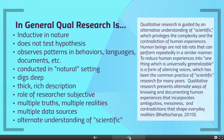We also recognize that there are multiple truths and multiple realities, and that what is true for one participant may not be true for another. We're going to collect data from multiple sources, and we understand that qualitative research is an alternate understanding of scientific. Through qualitative research, we are able to examine the complexity of human experiences and provide alternate ways of knowing.